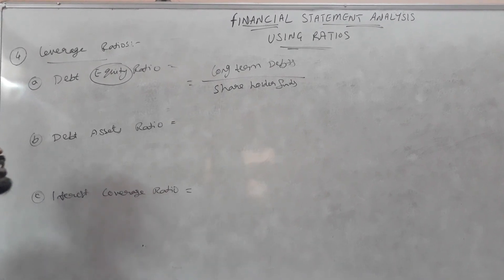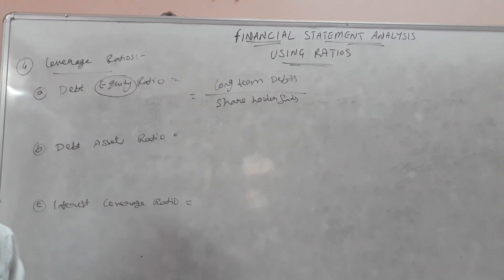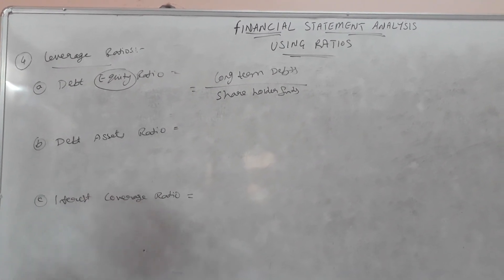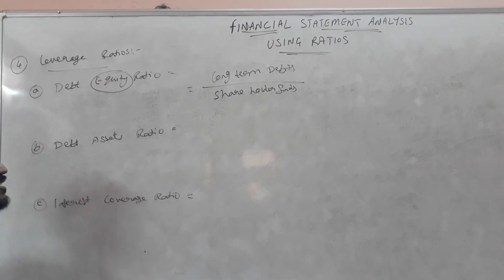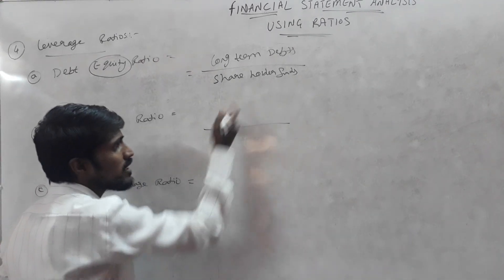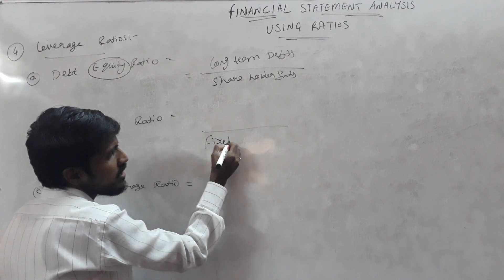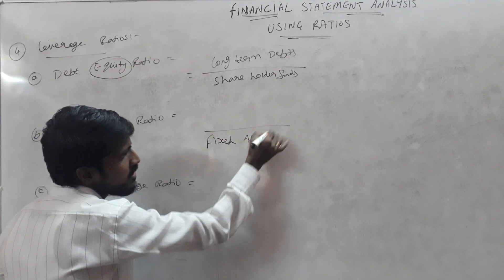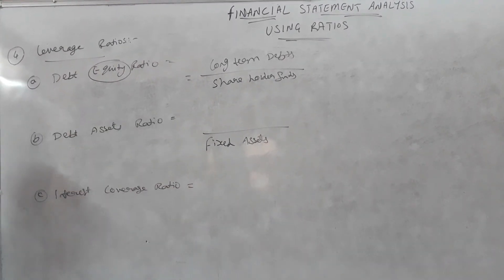The formula will be long-term liabilities divided by shareholder funds. Next comes to the debt-asset ratio. Assets are put on the same level as long-term liabilities. We will take fixed assets, not current assets — that is fixed assets.